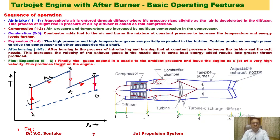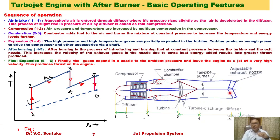The final expansion (process 5 to 6) takes place in the exhaust nozzle. The gases expand in the nozzle to ambient pressure and leave the engine as a jet at very high velocity, producing thrust. The high-pressure, high-temperature gases from the tailpipe burner finally expand in the nozzle and produce thrust. This is how the turbojet engine with afterburner works.